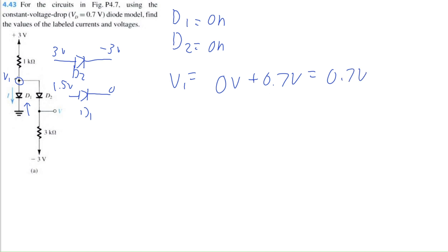So if V1 is 0.7 volts and we travel down this wire and we cross this diode D2, that would mean V is equal to 0.7 volts minus the voltage drop across D2, which is 0.7 volts. That's equal to 0 volts. So that's the first part of the question. V is equal to zero.